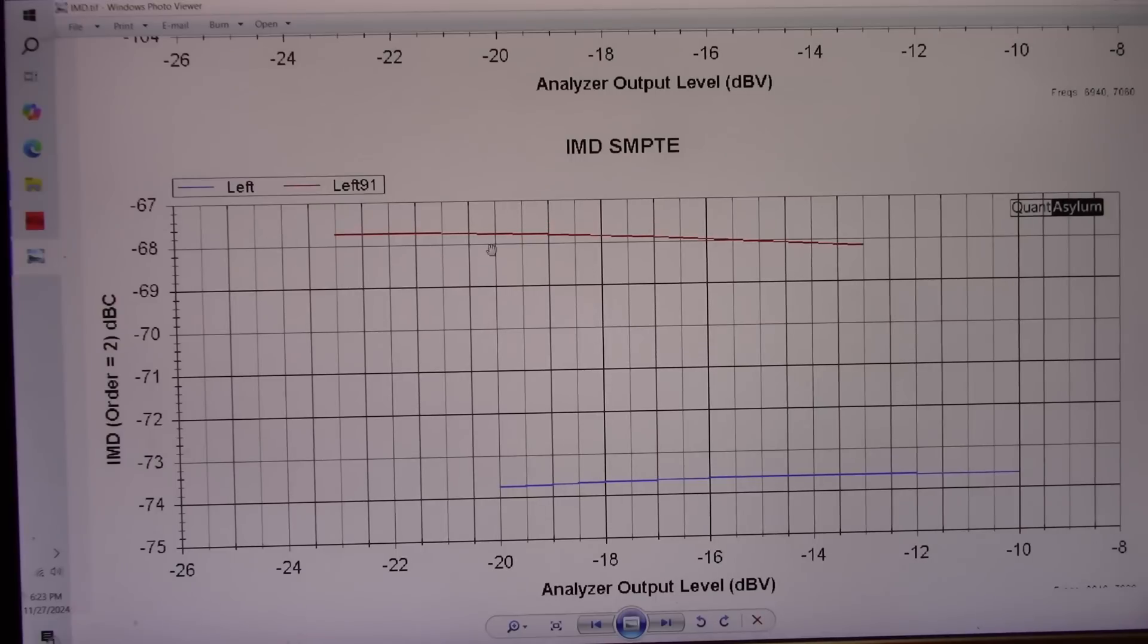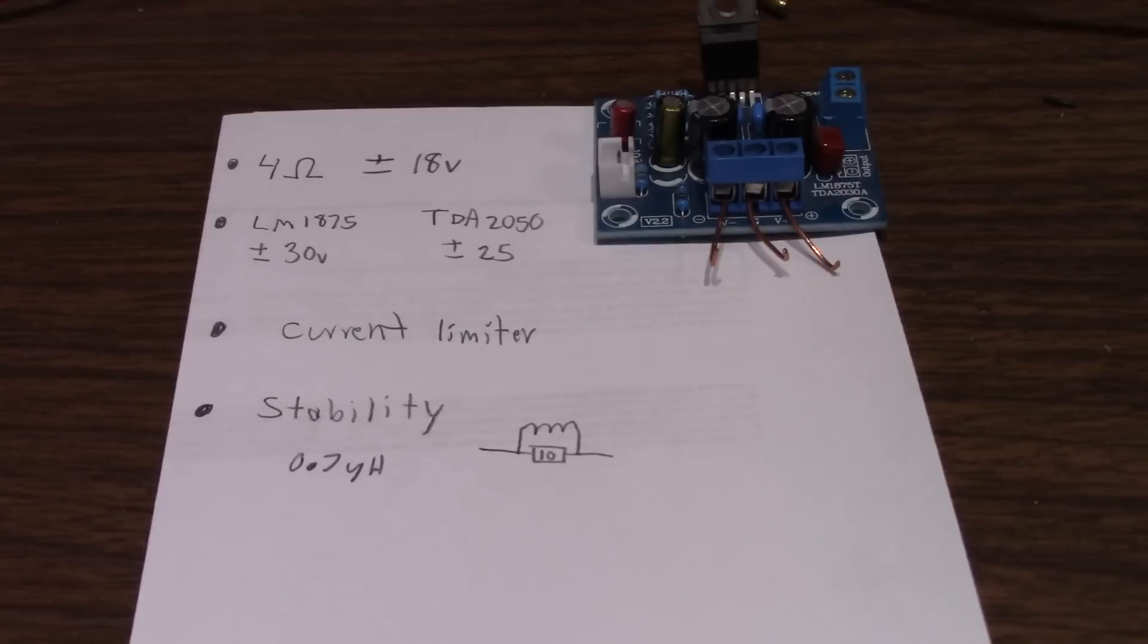So, yeah, the LM1875 has quite a bit higher level of intermodulation distortion, but it's certainly not bad.